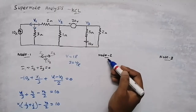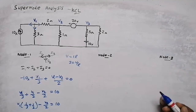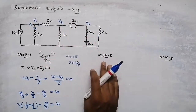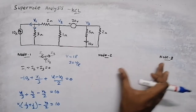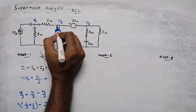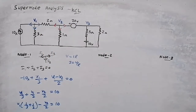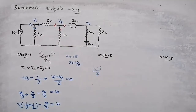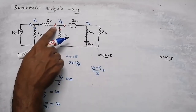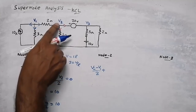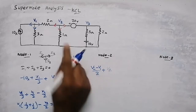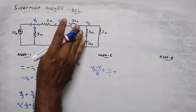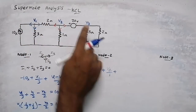In normal procedure we would write a second and third nodal equation separately, but since there is a voltage source between two nodes, we need to do supernode analysis. In supernode analysis, we combine Node 2's and Node 3's equations. For Node 2, assuming all currents flow away from the node, the first term is (V2 − V1)/2. Then the current through the next branch is V2/1. But we cannot find the current through the voltage source branch, so we avoid that region and combine with Node 3's equation.